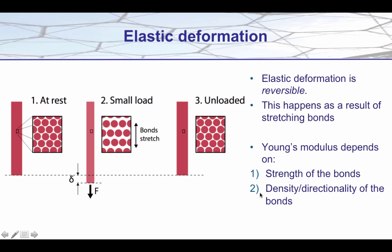So the strength of the bonds is very important and will govern what the Young's modulus of a material is. The other thing to take into account is the number of bonds, or the density of those bonds, and which way they point — and that can have a dramatic effect also on the Young's modulus.